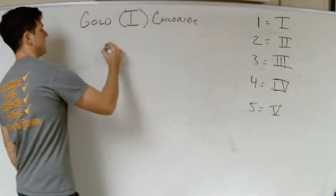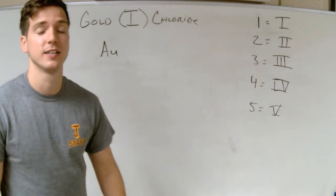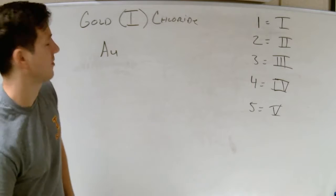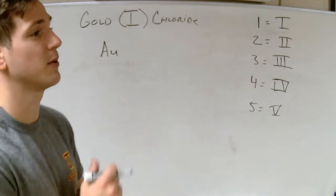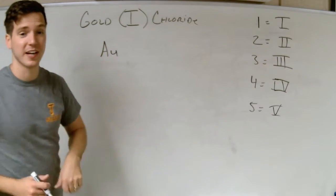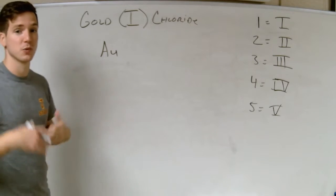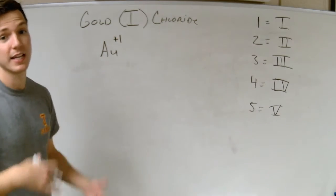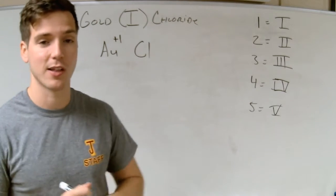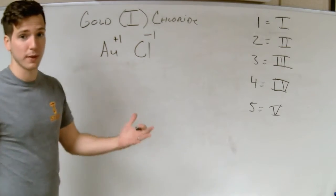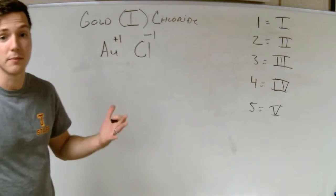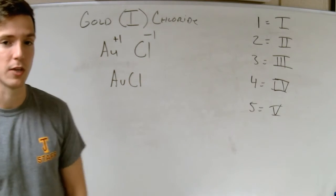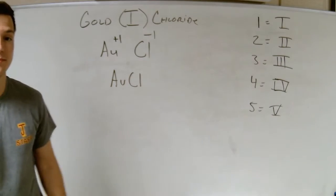We write down the symbols first. Gold is Au — remember that by imagining a guy in New York selling gold chains saying 'Au, want to buy a gold chain?' The charge on gold: I see the Roman numeral I, so the charge is plus 1. Chloride comes from chlorine, which is in the halogens column with a fixed charge of minus 1. Plus 1 and minus 1 are already balanced, so our compound is just AuCl.